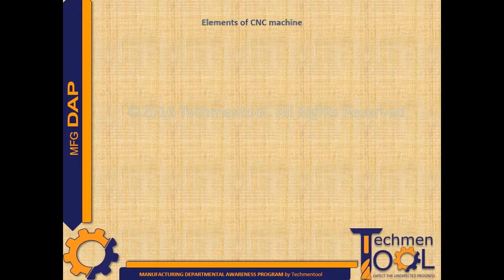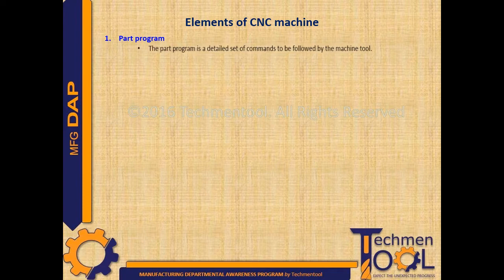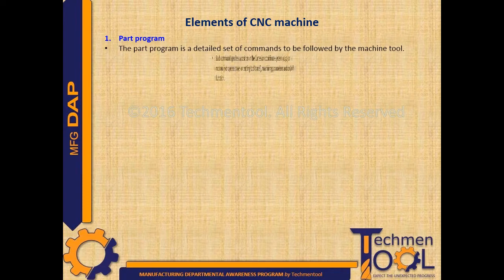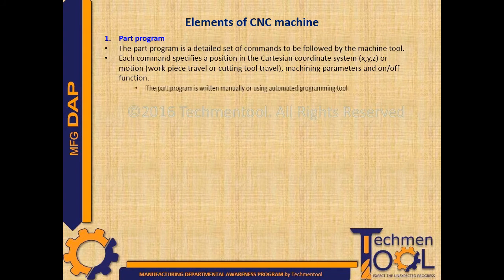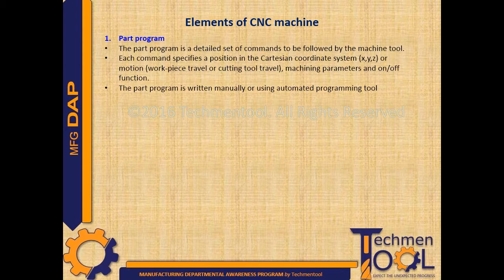There are three main elements of CNC machine: part program, machine control unit, and machine tool. The part program is a detailed set of commands to be followed by the machine tool. Each command specifies a position in the Cartesian coordinate system or motion, machining parameters, and on and off functions.